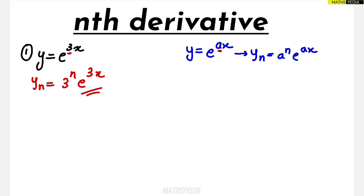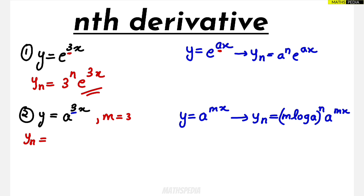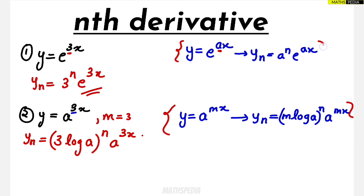The next problem is y = a^(3x) — note it is a power, not e power. This can be related to the formula y = a^(mx), where the nth derivative is given by (m·log a)^n · a^(mx). Here m = 3, so the nth derivative is (3·log a)^n · a^(3x). You have to write the formula on the side so it is clear which formula was applied.